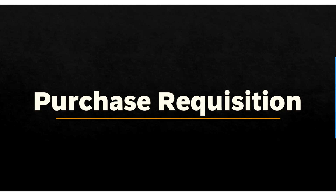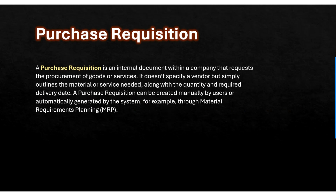In this section, we are going to learn about the purchase requisition in SAP S/4HANA MM. A purchase requisition is an internal document within a company that requests a procurement of goods and services. It does not specify a vendor but simply outlines the material or service needed along with the quantity and required delivery date. A purchase requisition can be created manually by users or automatically generated by the system, for example through the Material Requirement Planning program.